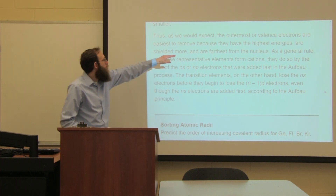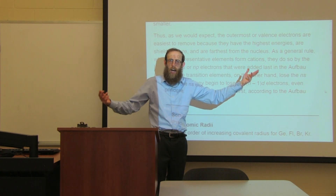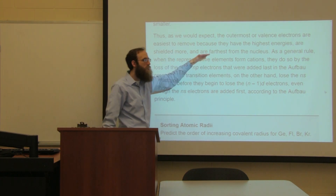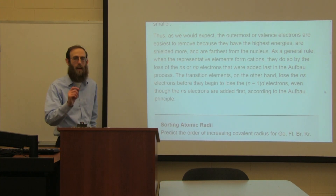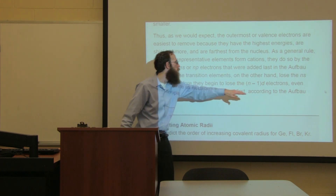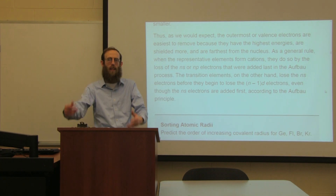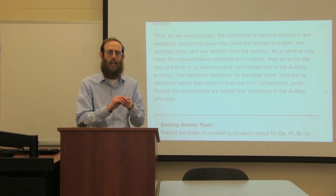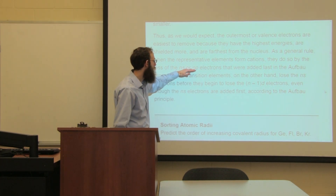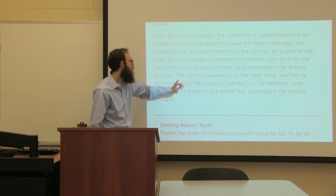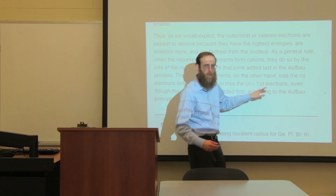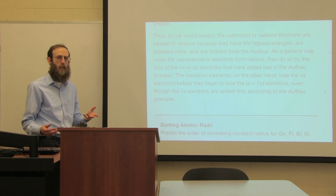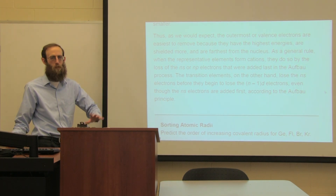The outermost valence electrons are the easiest to remove because they have the highest energy, the most shielding, and are furthest from the nucleus. When elements form cations, they do so by loss of the ns or np electrons that were added last. For main group elements, you remove the last added electron to make a cation. For transition elements, they actually lose the ns electrons rather than the (n-1)d electrons. So for the 3d row, we would remove the 4s electrons before removing the 3d.